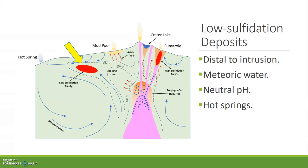Dissolved elements such as gold and silver cannot remain in the vapor phase, and so the liquid phase becomes supersaturated, resulting in the precipitation of quartz veins with associated mineralization. This process is commonly referred to as boiling, although it is not boiling according to the generally accepted definition.